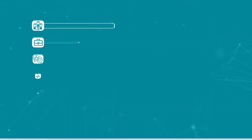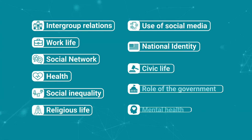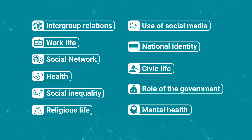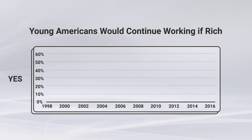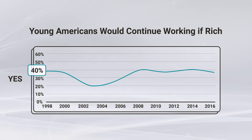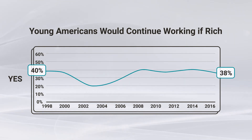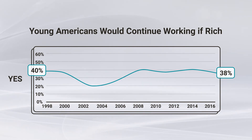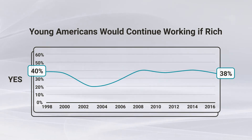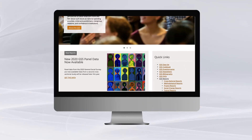The GSS has covered a wide variety of topics about American society. Those topics have differed between years, making GSS data suitable for classroom projects and activities, lectures, dissertations, public policy decisions, statistical market research, and much more.